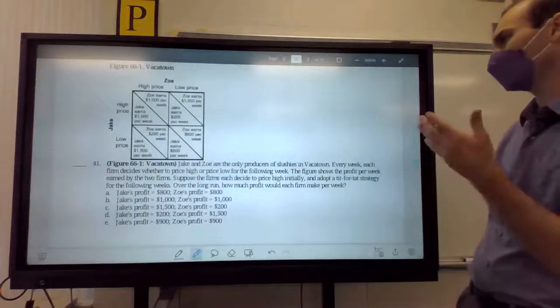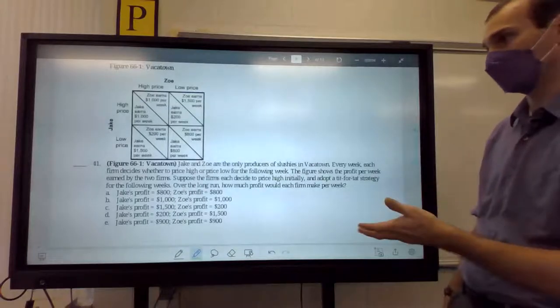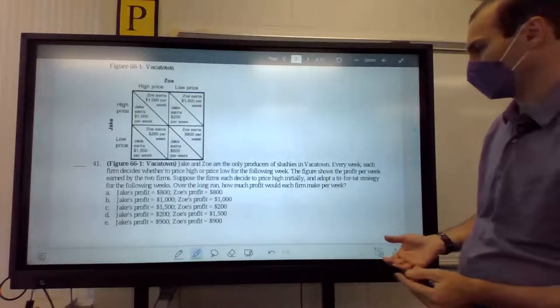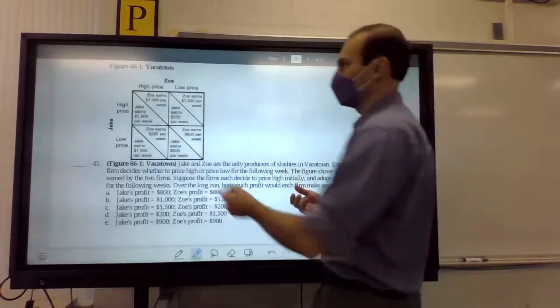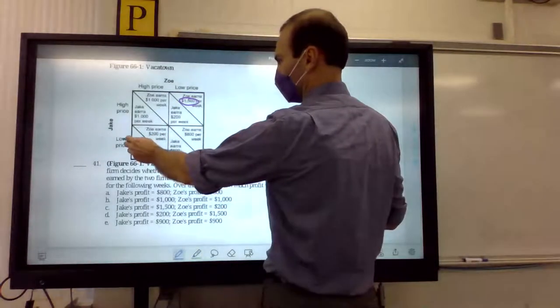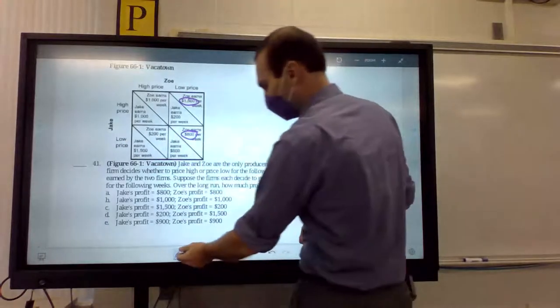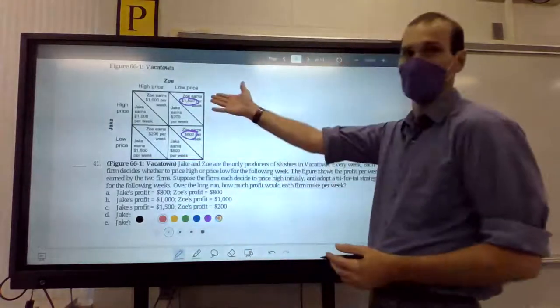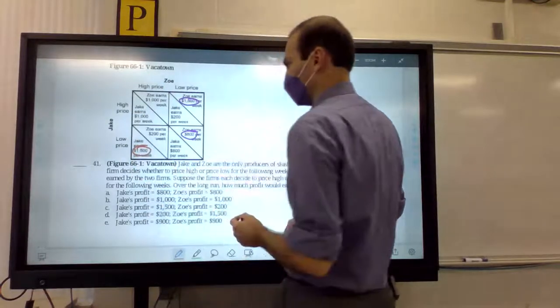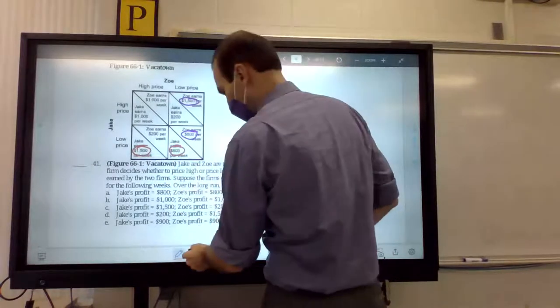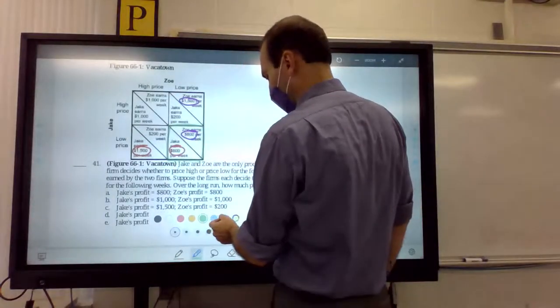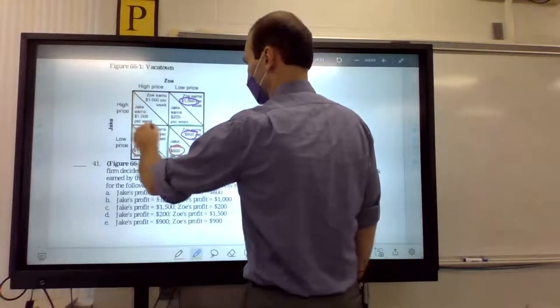Jake and Zoe are the only producers of slushies in Vodka Town. Every week, each firm decides whether to price high or price low for the following week. The figure shows the profit per week earned by the two firms. Suppose the two firms decide to price high initially and adopt a tit-for-tat strategy in the following weeks. Over the long run, how much profit would each firm make per week? So, let's just go ahead and solve this. If we are Zoe and Jake sets a high price, we want to have a low price. And if Jake goes ahead and sets a low price, we want to do a low price. On the other hand, what's that? So, Zoe has the dominant strategy of low prices. On the other hand, if we're Jake and Zoe sets a high price, we want to have a low price. And if Zoe sets a low price, we also want to have a low price.